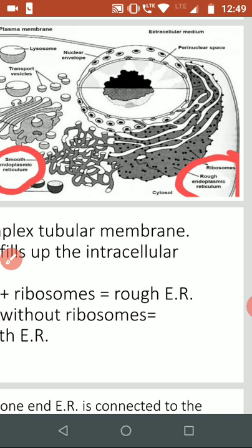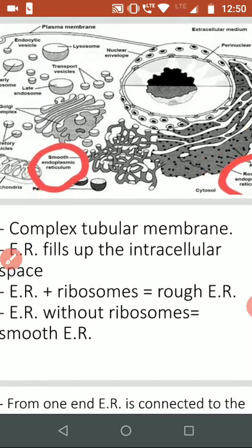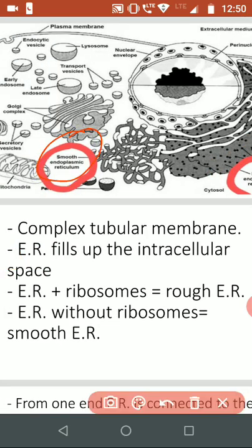There are two types of endoplasmic reticulum. The first one is the rough endoplasmic reticulum. There are ribosomes over it. Here you can see the dots. These ribosomes give it a rough-like structure, and that's why it's called rough endoplasmic reticulum.